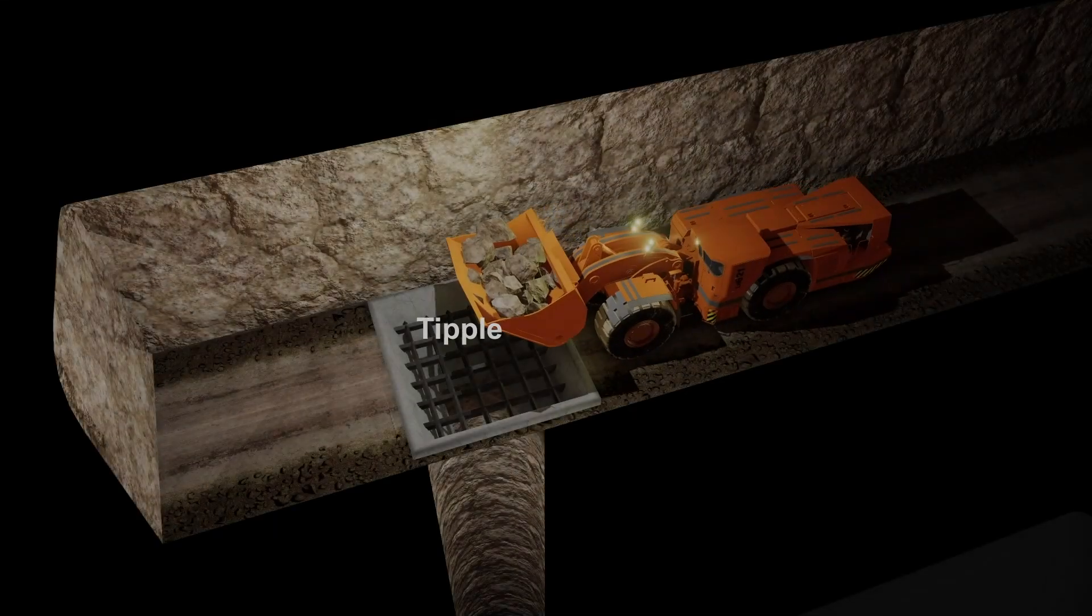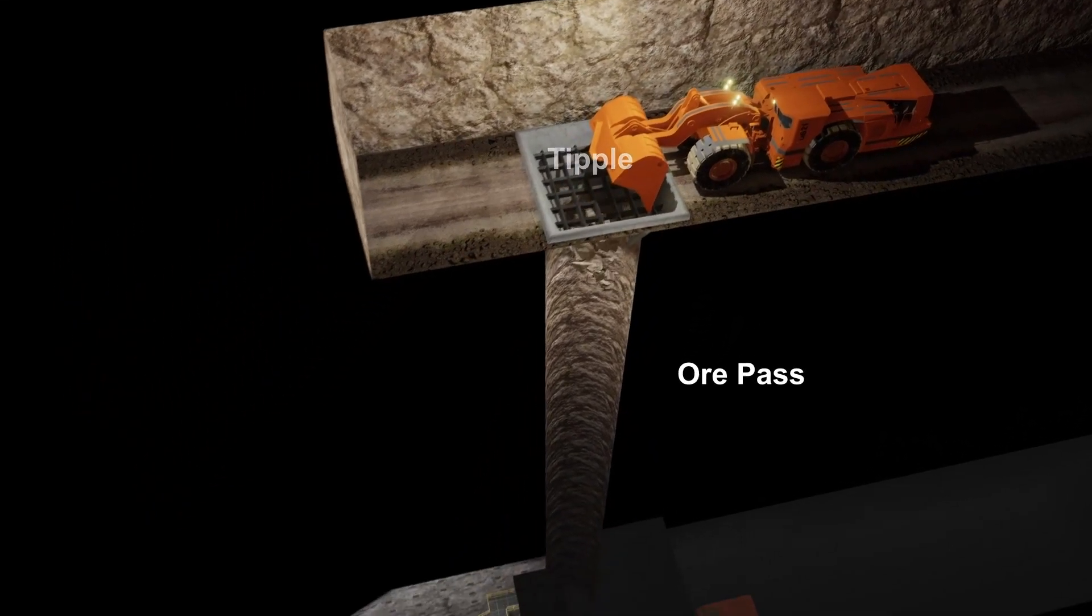Ore is loaded into ore passes before being drawn out into haul trucks that will have autonomous capability.